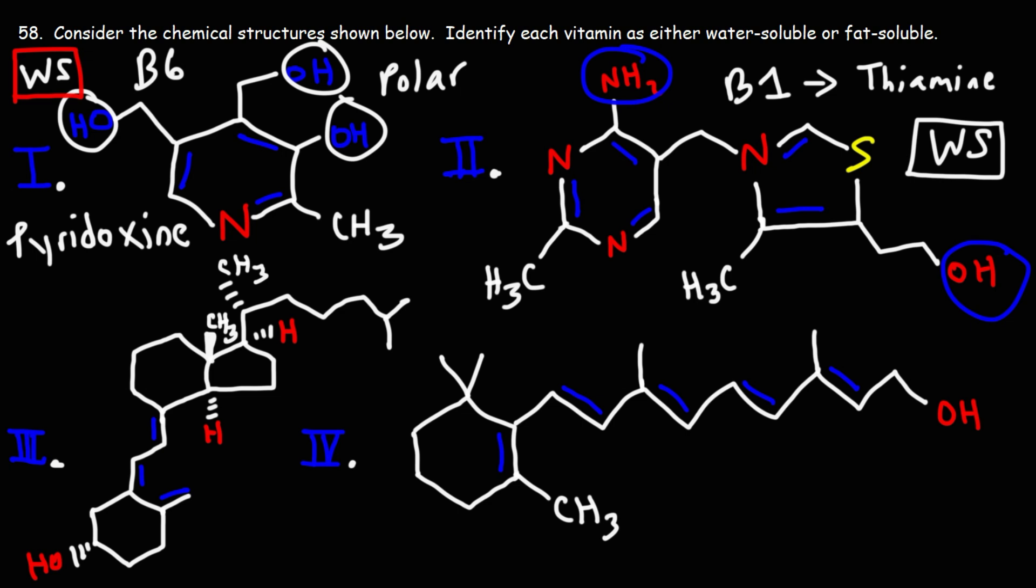Now moving on to compound 3, this is vitamin D3. Vitamin D3 is produced by your body when your skin is exposed to sunlight. The UV radiation from the sun helps your body to create this vitamin.